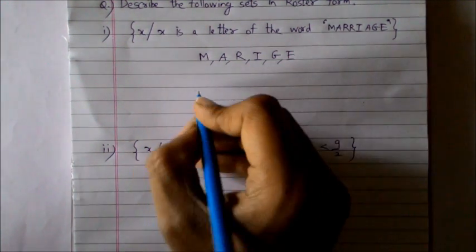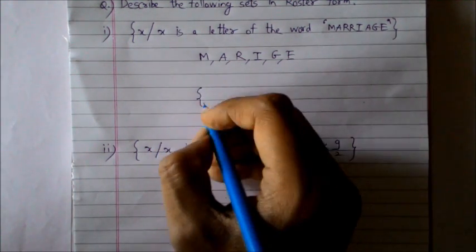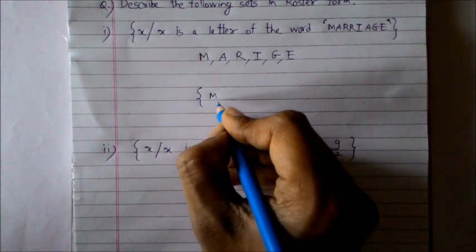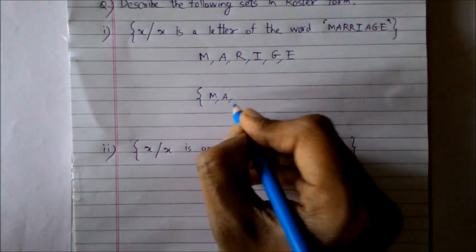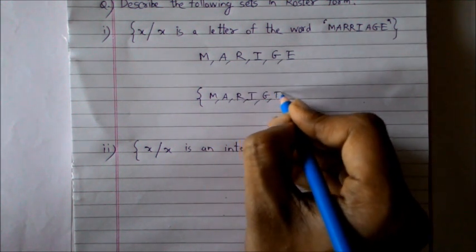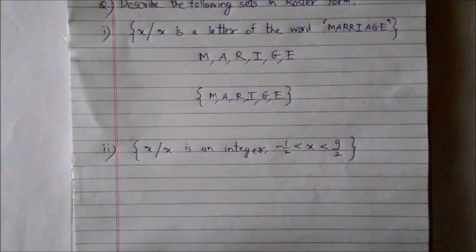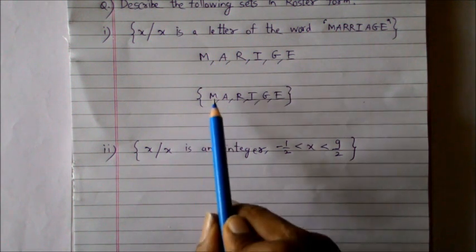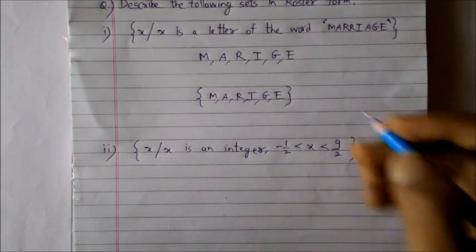This set in the roster form will be inside the curly braces and separated by commas. The elements will be M, A, R, I, G, and E. You can write them in alphabetical order but this is perfectly fine. So this set has one, two, three, four, five, six elements.